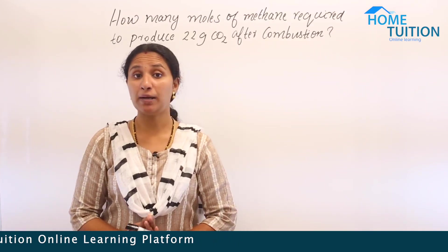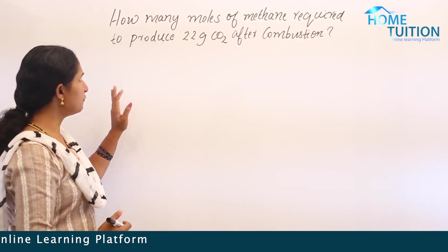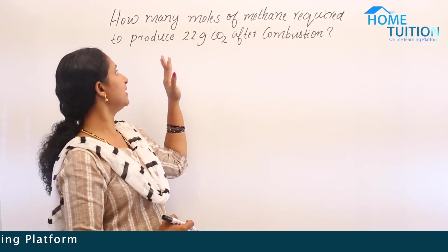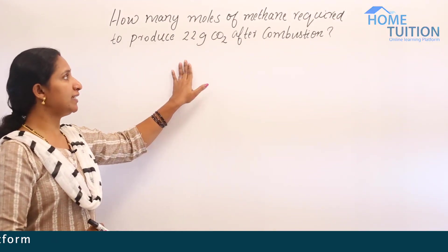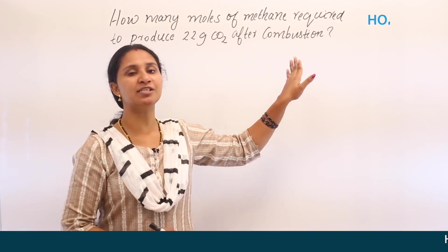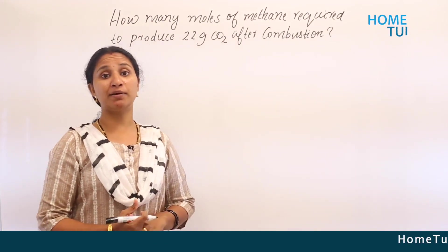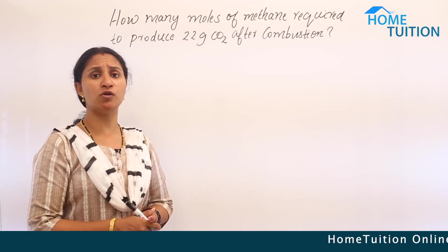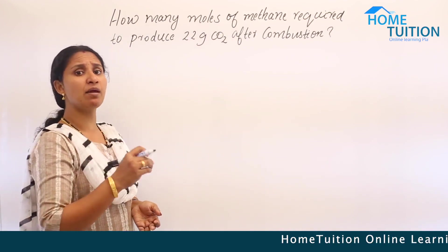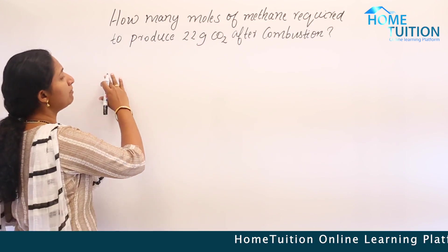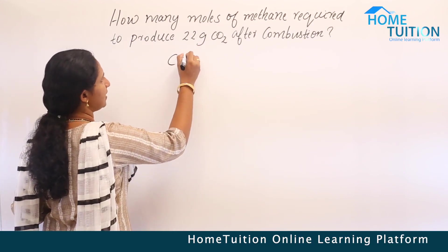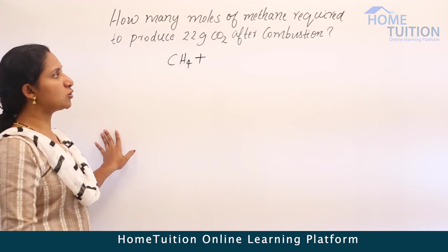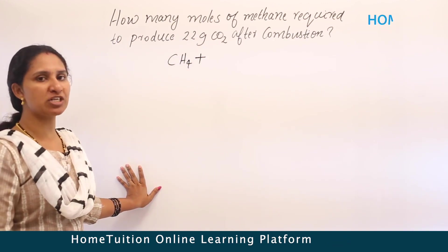Let's do some problems from this chapter. First question: how many moles of methane are required to produce 22 grams of carbon dioxide after combustion? This is a stoichiometric calculation problem, so first we write the balanced chemical equation. Methane, CH4, is combusted to produce carbon dioxide.